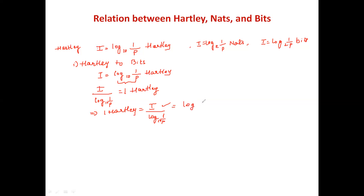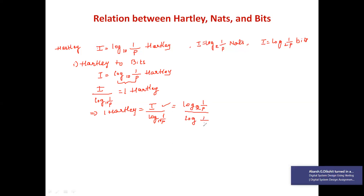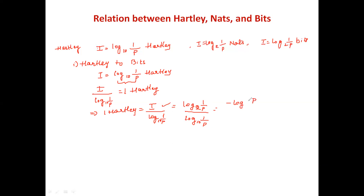The same expression in bits can be written as log(1/p) to base 2 divided by log(1/p) to base 10. Writing log(1/p) as minus log p, we get minus log p to base 2 divided by minus log p to base 10. The two minus signs cancel, giving us 1 hartley equals...